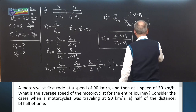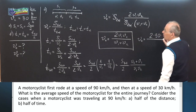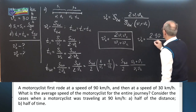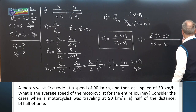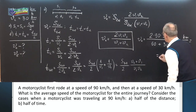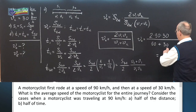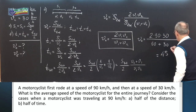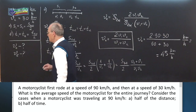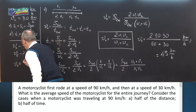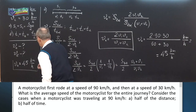VA equals 2 times 90 times 30 divided by (90 plus 30) kilometers per hour, which gives 5400 divided by 120, equal to 45 kilometers per hour. So for Case A we obtain VA equal to 45 kilometers per hour. This is the first answer.